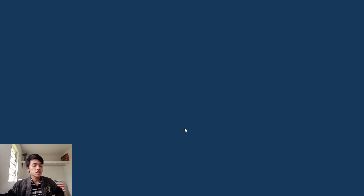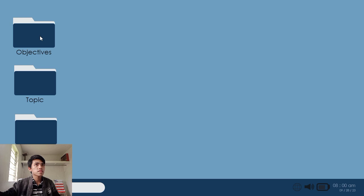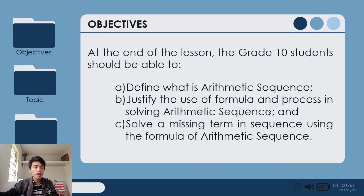Before we discuss our topic, let's have our objectives. At the end of the lesson, the Grade 10 students should be able to: A. Define what is arithmetic sequence. B. Justify the use of formula and process in solving arithmetic sequence. And C. Solve a missing term in sequence using the formula of arithmetic sequence.